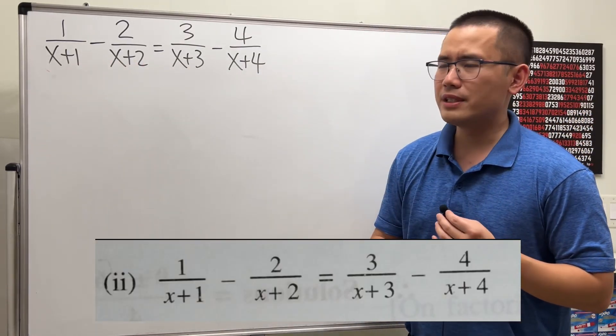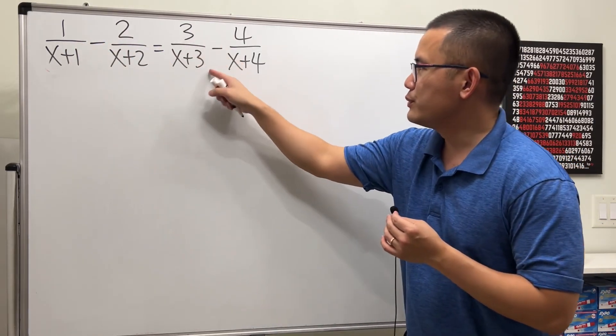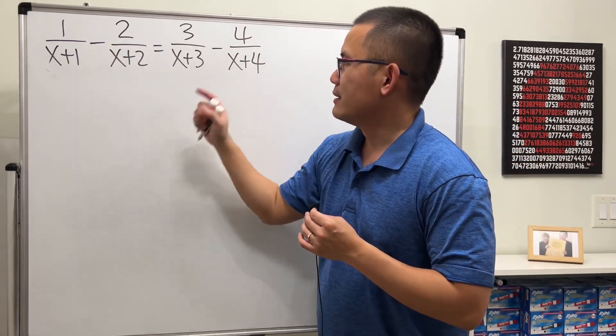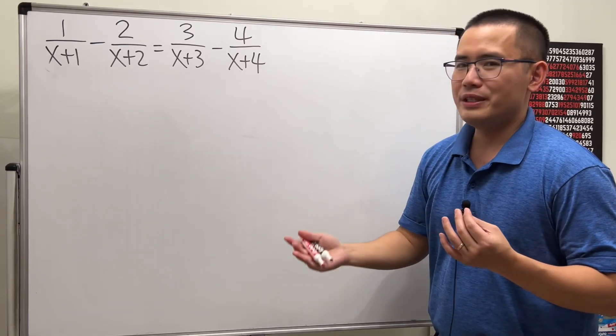And I really like this because you see that we have the 1, 2, 3, 4, minus, minus. And it looks just so pretty, right?